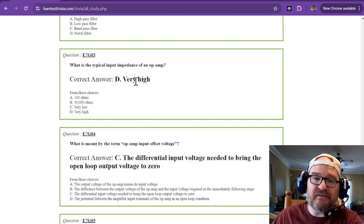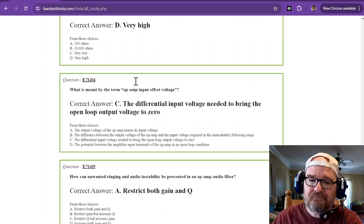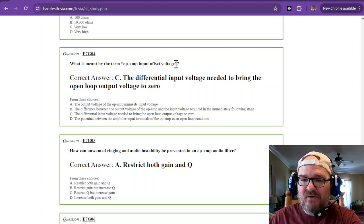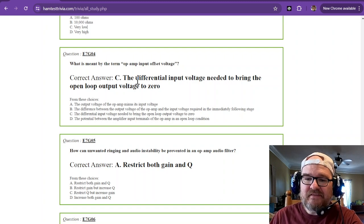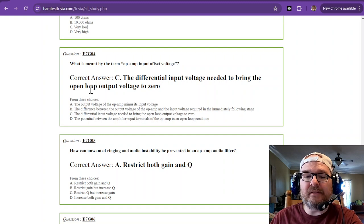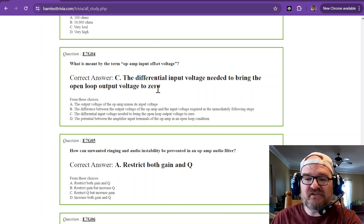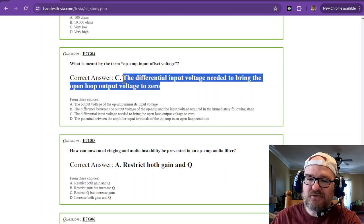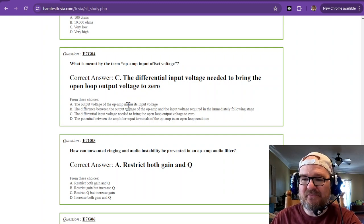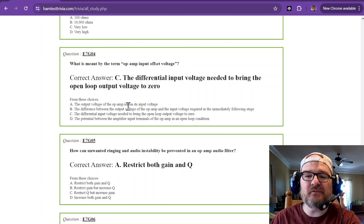The input impedance is very high, and the output impedance is very low. So what is meant by the term op amp input offset voltage? The differential input voltage needed to bring the open loop output voltage to zero. Unfortunately, that's just something you need to memorize.